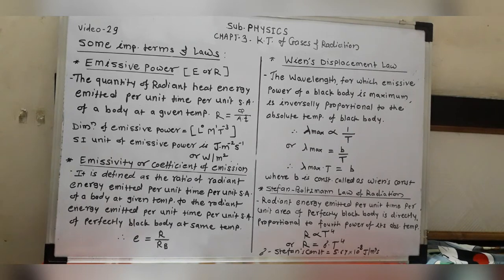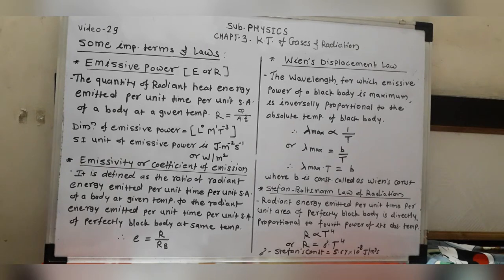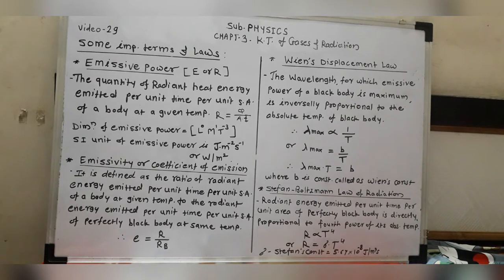First, we look at emissive power, which is denoted by the letter E or capital R, because it represents radiant energy. Emissive power is defined as the quantity of radiant heat energy emitted per unit time per unit surface area of a body at a given temperature. The formula is R = Q / (A × T), where Q is the amount of heat, A is the surface area, and T is the time interval.